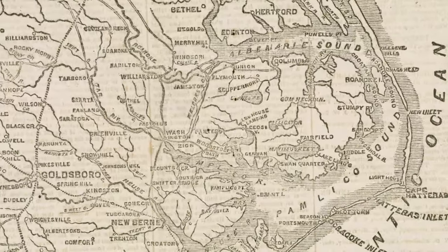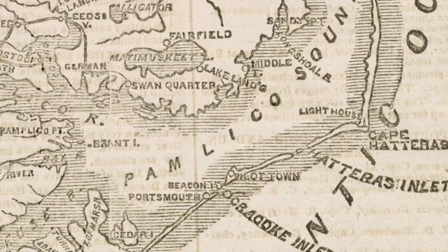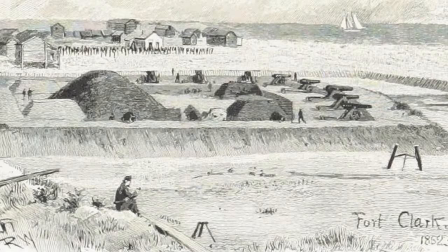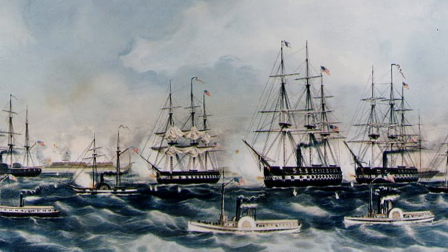As the Civil War began, Hatteras Inlet — which lay between Hatteras and Ocracoke Islands — was the most traveled and vulnerable inlet on the Outer Banks. Soon after the firing on Fort Sumter, Confederate soldiers and enslaved people began building two sand forts at the southern end of Hatteras Island to defend Pamlico Sound. Those defenses were mostly manned by members of the 7th North Carolina troops, led by Colonel William F. Martin. Hatteras soon became a principal port for Southern privateers, who took dozens of ships and cargo worth millions of dollars.